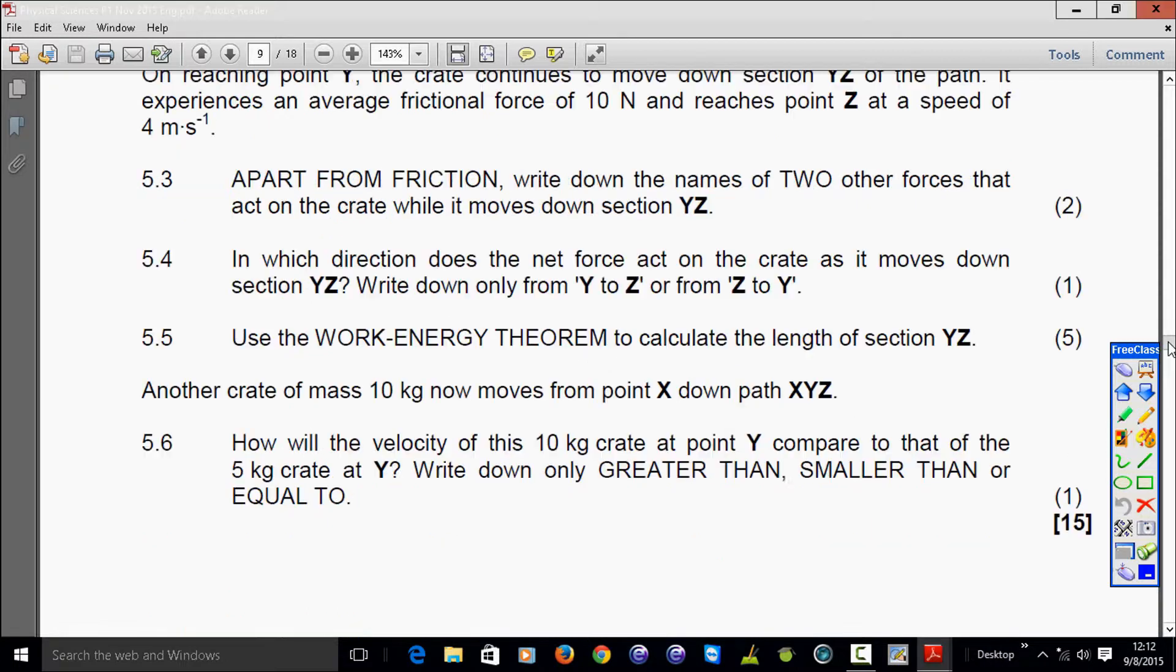Right. Next question. On reaching point Y, the crate continues to move down section YZ of the path. It experiences an average frictional force of 10 Newton. Frictional force. And reaches point Z at a speed of 4 meters per second. So now we can see that the velocity has decreased from the 8.85 that we've just calculated to 4. And the next question asks us about the different forces that are acting here. Because that is what we need to consider before we do any calculations.